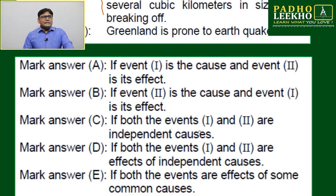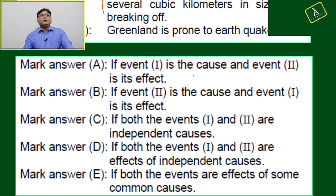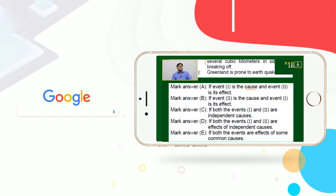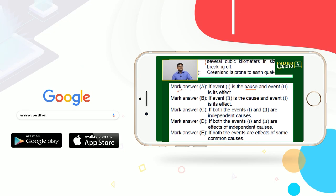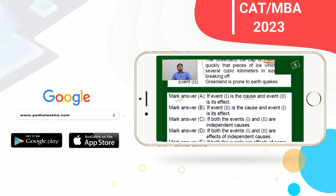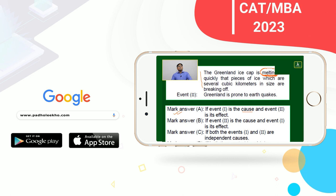So we can say event one is the cause and event two is its effect. Now, if you remove the melting from the scenario, what will happen? There is no trigger for the earthquake.